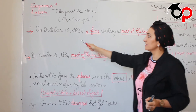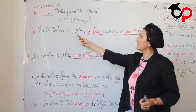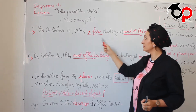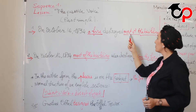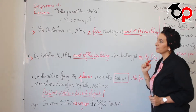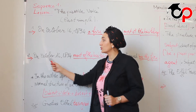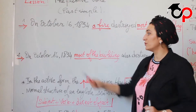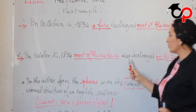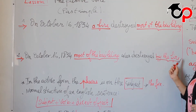Take a look at these sentences. On October 16, 1833, a fire destroyed most of the building. Take a look at the second one: on October 1834, most of the building was destroyed by the fire.